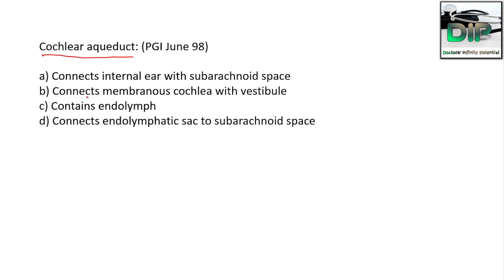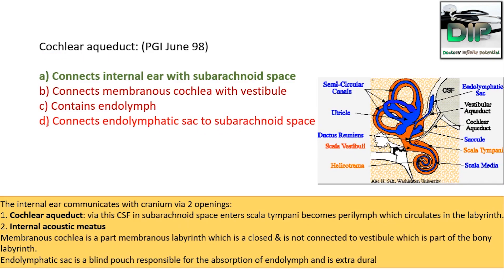Next question on the cochlear aqueduct — Option A: Connects internal ear with the subarachnoid space, Option B: Connects membranous cochlea with the vestibule, Option C: Contains endolymph, Option D: Connects endolymphatic sac to the subarachnoid space. The correct answer is: connects internal ear with the subarachnoid space. The cochlear aqueduct connects the cochlear part of the internal ear to the subarachnoid space where there is CSF.